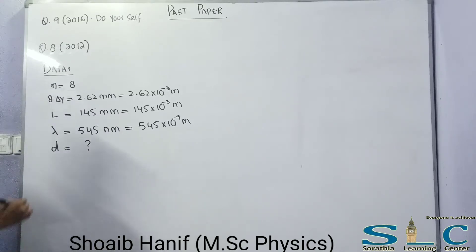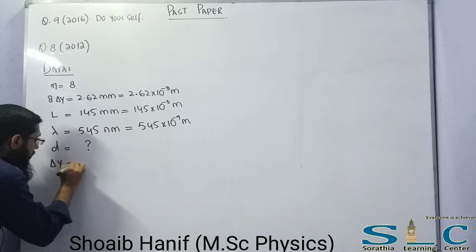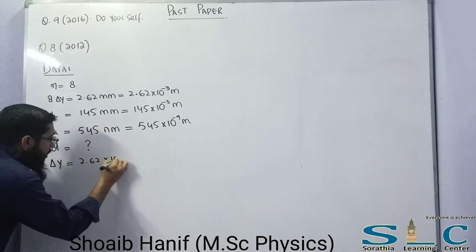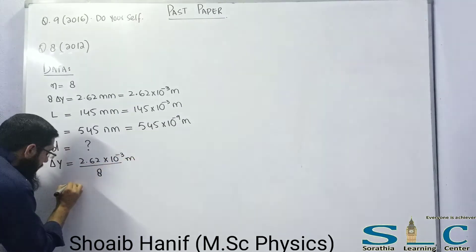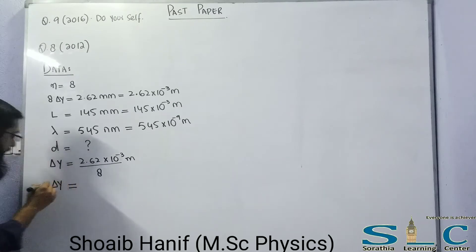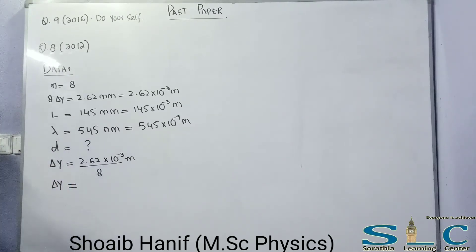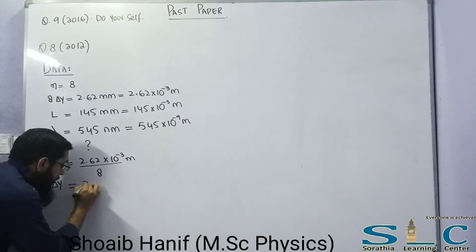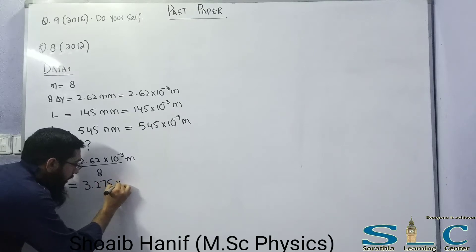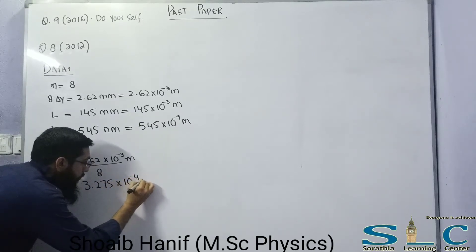First, find Δy: Δy = 2.62×10⁻³ / 8 = 3.275×10⁻⁴ meter.